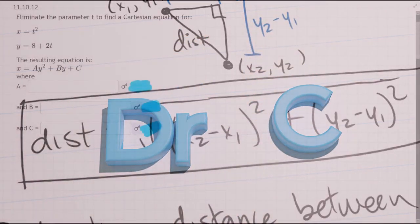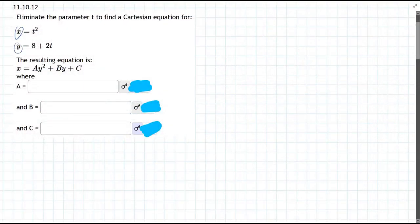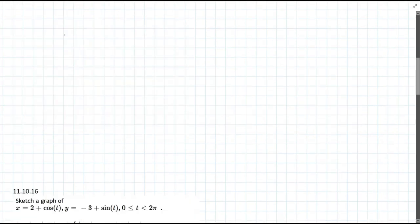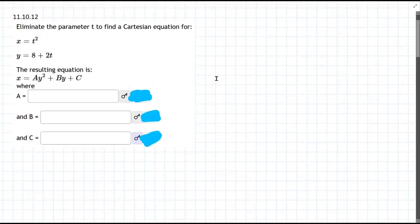This question, we're given parametric equations, which is an x and a y in terms of parameter t. And we need to turn it into Cartesian, which means eliminate the t variable.